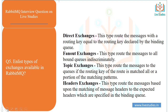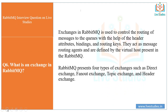Another question: what is an exchange in RabbitMQ? In RabbitMQ, exchanges are used to control the routing of messages to queues with the help of header attributes, bindings, and routing keys. They act as message routing agents and are defined by the virtual host present in RabbitMQ. RabbitMQ provides four types of exchanges: Direct, Fanout, Topic, and Header.